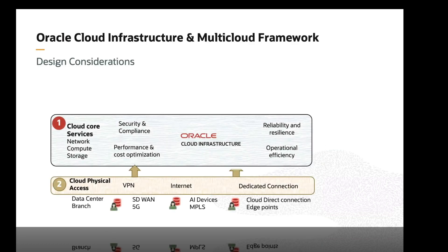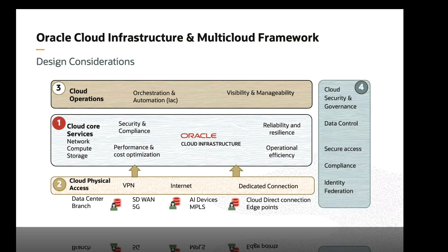Now we will see how Oracle Cloud Infrastructure maps with the multi-cloud architecture framework. To help organizations with multi-cloud adoption, they can choose from core cloud services including networking, compute, storage, and more. OCI provides many options to create network connections — for example, provisioning a dedicated connection between clouds, a VPN, or both for resilience. OCI can be provisioned as infrastructure as code for enabling automation in multi-cloud deployment. Last but not least, OCI is built upon a security-first and zero-trust architecture, which can be leveraged to build security and governance across multiple cloud providers. This concludes the first section of this part of the course.